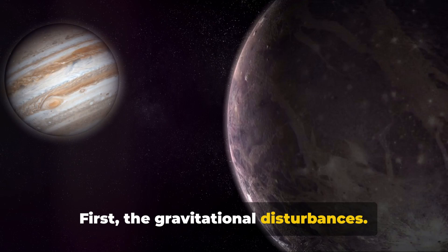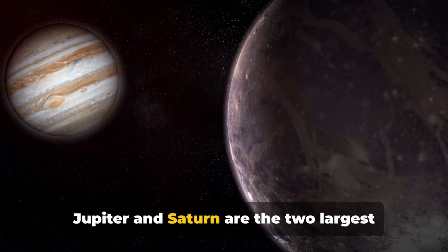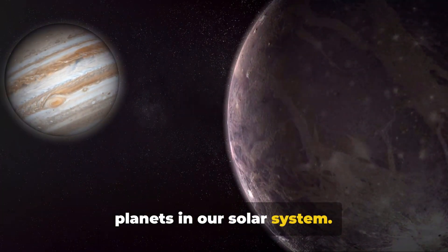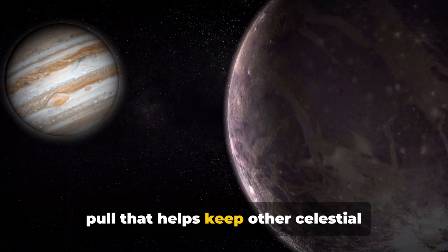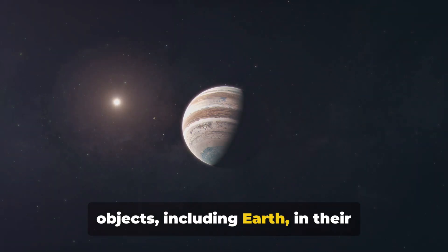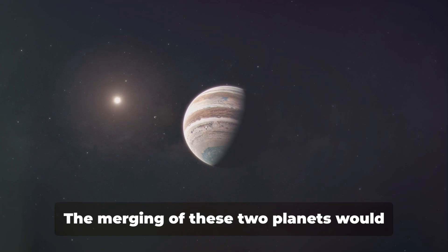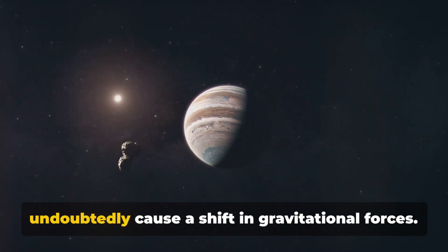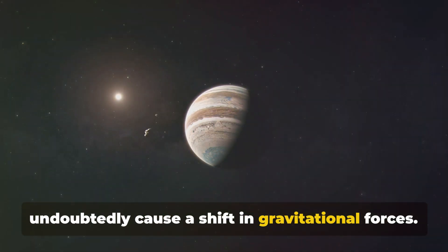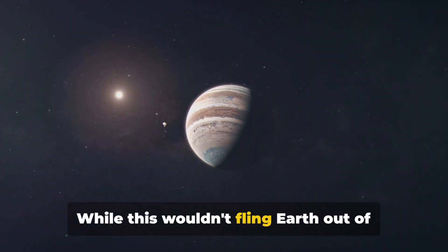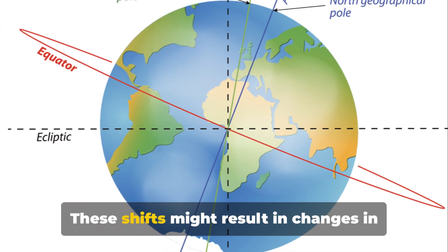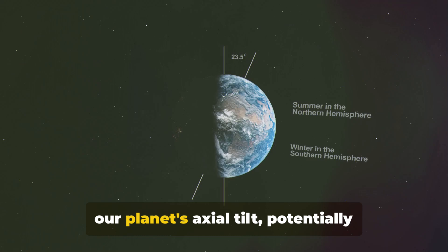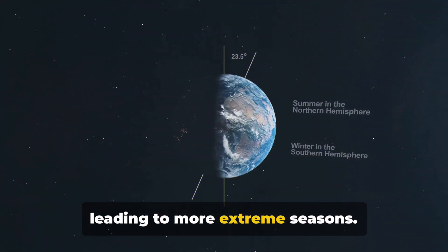First, the gravitational disturbances. Jupiter and Saturn are the two largest planets in our solar system. They exert a significant gravitational pull that helps keep other celestial objects, including Earth, in their respective orbits. The merging of these two planets would undoubtedly cause a shift in gravitational forces. While this wouldn't fling Earth out of its orbit, it could cause slight alterations. These shifts might result in changes in our planet's axial tilt, potentially leading to more extreme seasons.